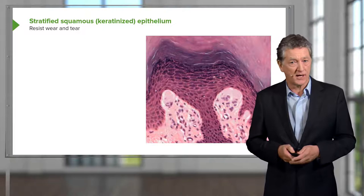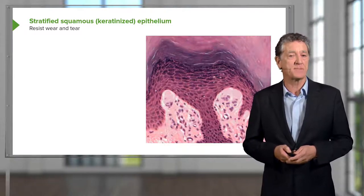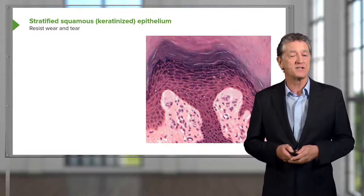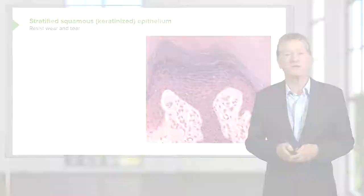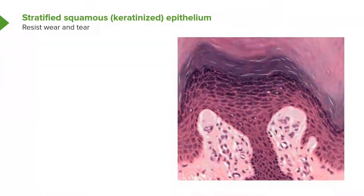Here's an example of stratified squamous keratinised epithelium — skin. At the top of the image you can see purple-stained material: that's keratin. It's very thick skin, such as found on the palms of our hands and soles of our feet — a wear-and-tear epithelium. I'll talk about skin in detail in a later lecture.